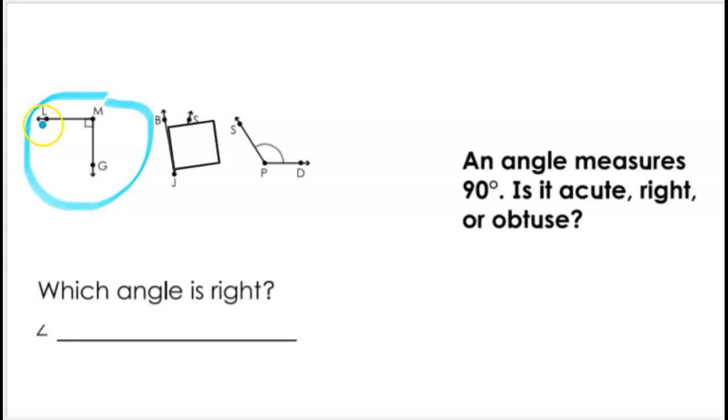And remember, we're going to say the name using the letters and the vertex. The letter on the point goes in the middle. So this is going to be LMG is the name of that angle. Okay, an angle measures 90 degrees. Is it acute, right, or obtuse? It is a right angle.